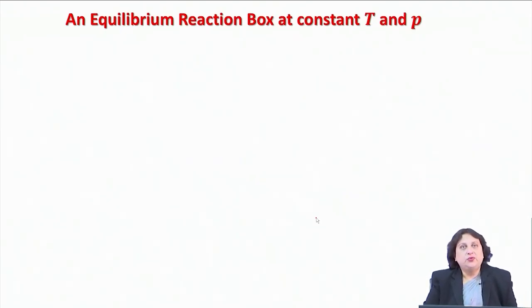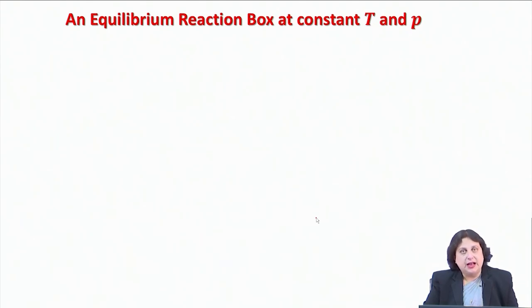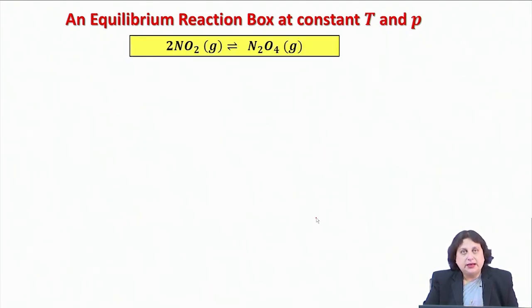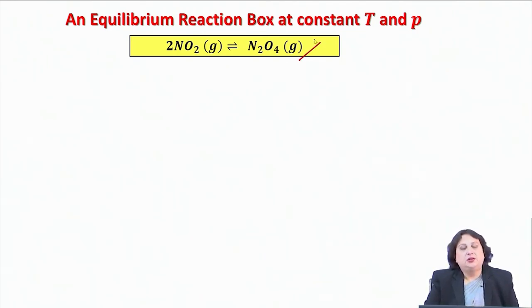Today's lecture we will start by using a thought experiment, and this thought experiment will concern an equilibrium reaction box which is being maintained at a constant temperature and pressure. Within this box, this reaction would happen where two moles of nitrogen dioxide in the gas phase will combine to give you one mole of N2O4, dinitrogen tetroxide.